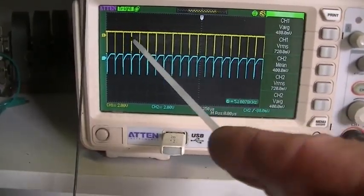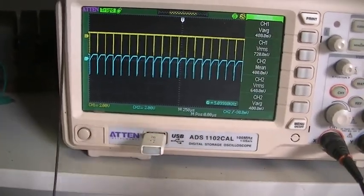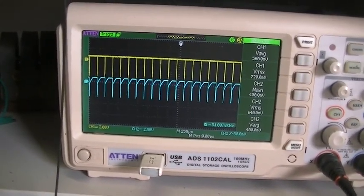Whereas on channel A before the diode, we can see it is pretty much instantaneous.